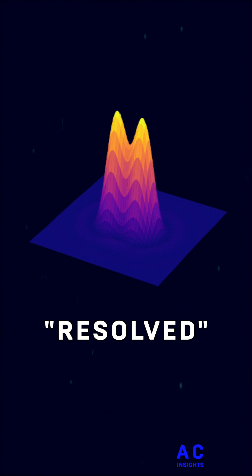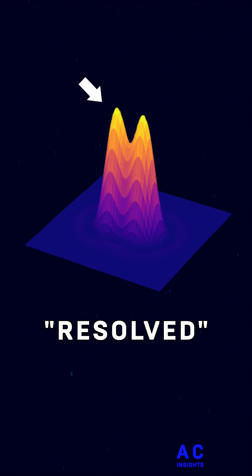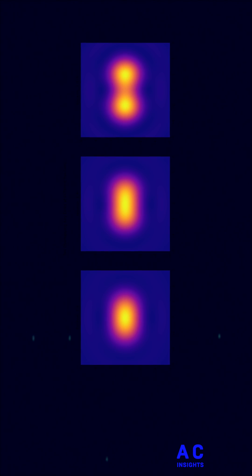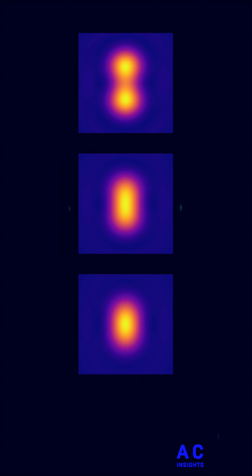The Rayleigh criterion states that two point sources are regarded as just resolved when the diffraction maximum, that is the center of the first Airy disc, coincides with the first minimum of the second Airy disc. As you can see here, the closer the two Airy discs come together, the less we can tell where one stops and where the other begins. It just becomes a blob.